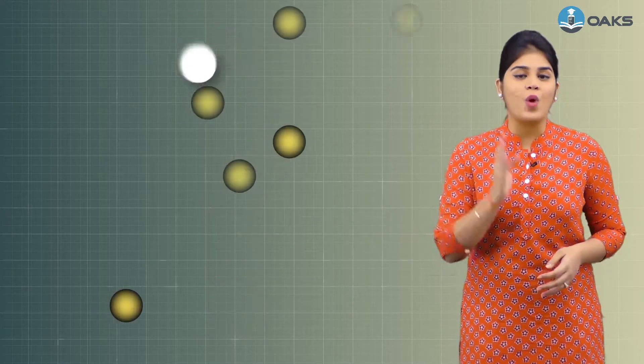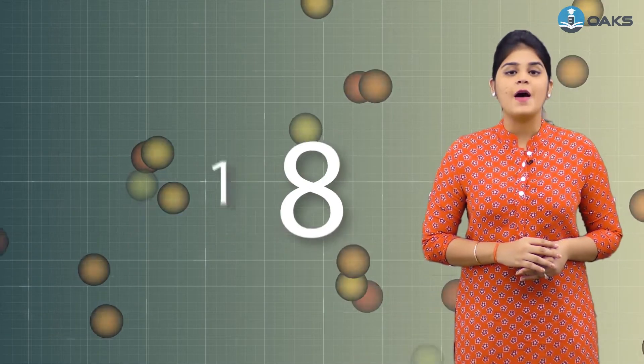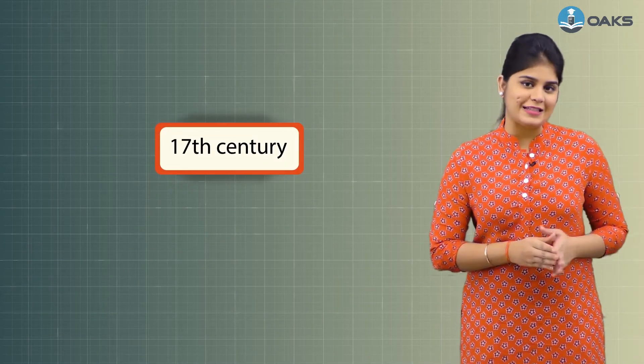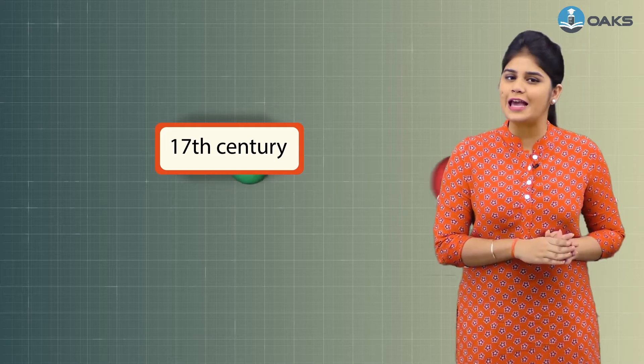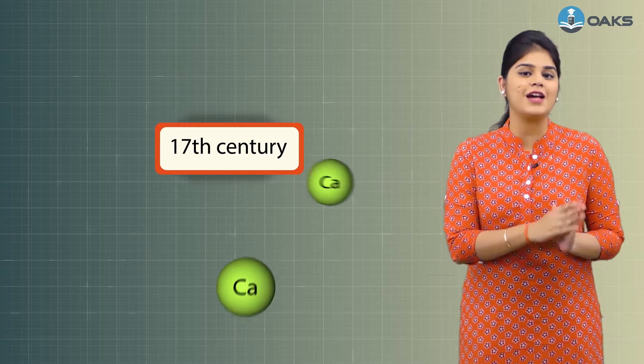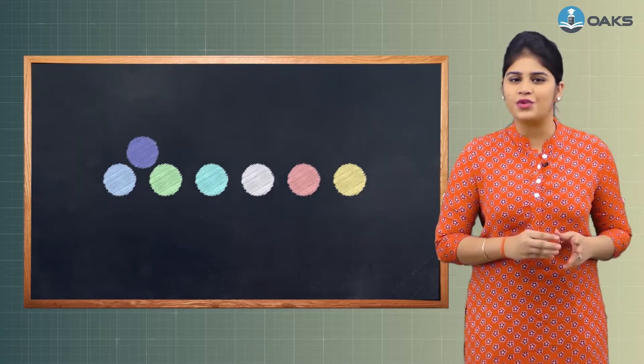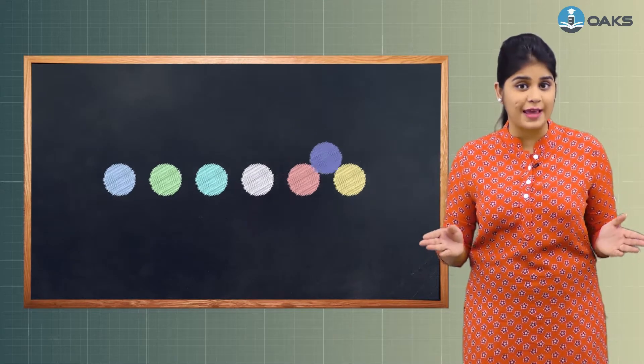Hi friends, do you know how many elements are known to us at present? There are 118 elements known now. Back in the 17th century, only 30 elements were known, and it was easy to remember those elements and their chemical properties. But with the discovery of new elements, scientists faced problems in arranging them.